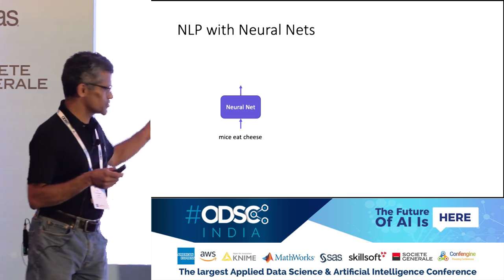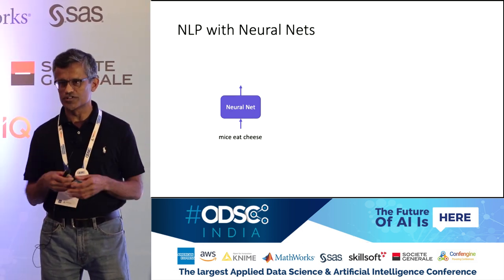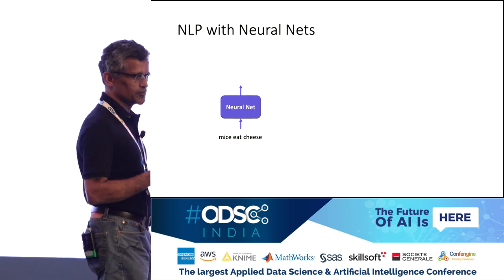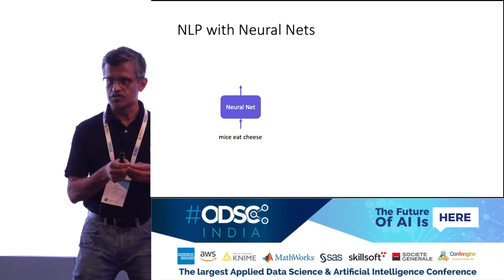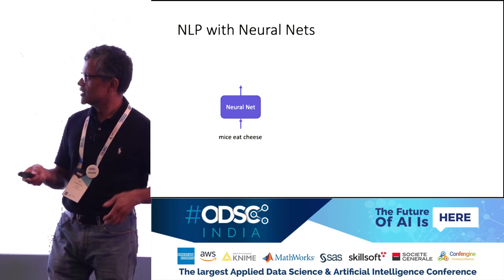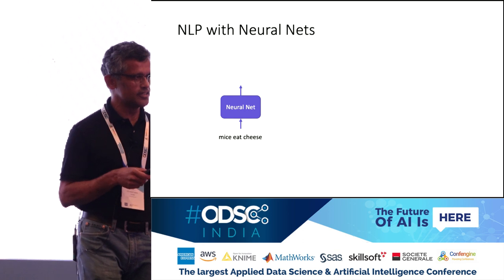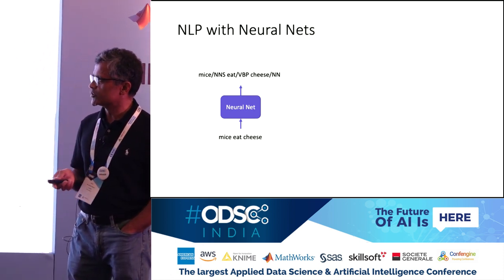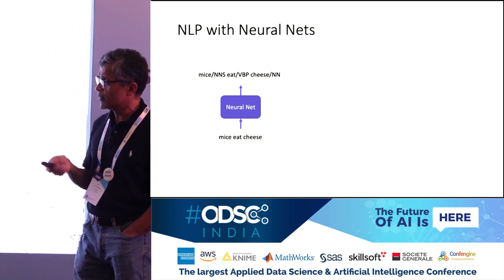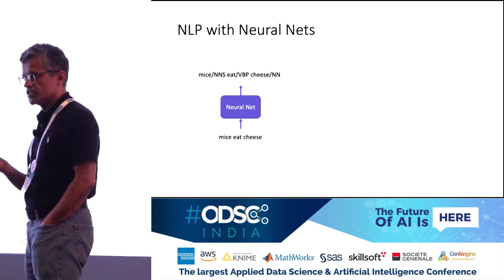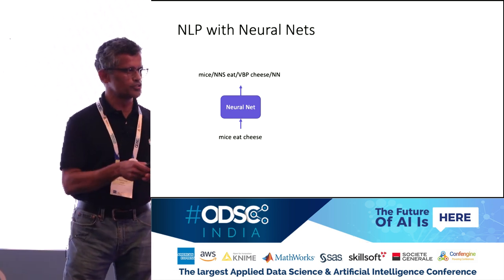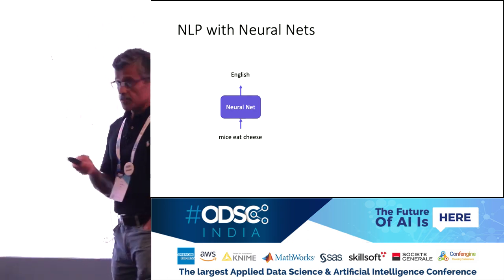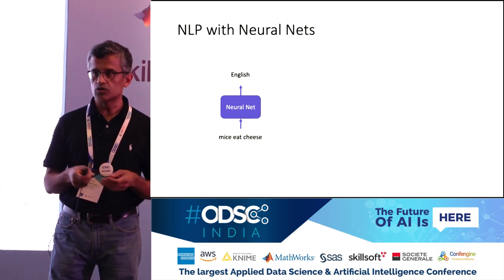A neural network is a black box that takes something as input and produces something else as output. For natural language processing, it's something that takes a sequence of words — because natural language is a sequence of words — and does something with it. For example, given the input 'mice eat cheese,' one thing we could do is tag each word: mice is a noun, eat is a verb, cheese is a noun. We want a neural network to do that tagging.